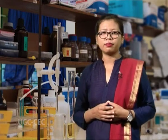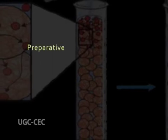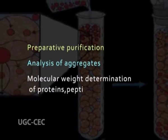In group separation, samples are separated into two major groups, for example in desalting to remove salts and other low molecular weight contaminants. A resin is chosen that excludes larger molecules from the pores of the beads, while smaller molecules are retained in the bead and then eluted. Fractionation is used for the separation of macromolecules of different sizes. The fractionation range of the resin defines the range of molecular weights that should be separable. Typical applications include preparative purification, analysis of aggregates and molecular weight determination of proteins, peptides and nucleic acids.